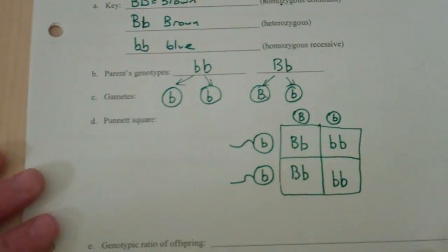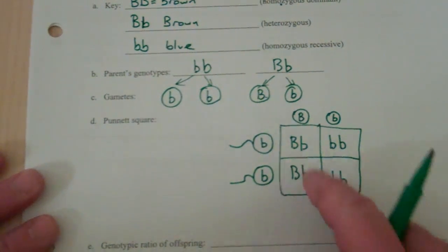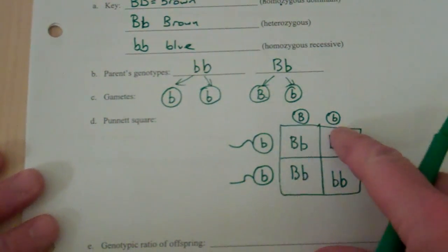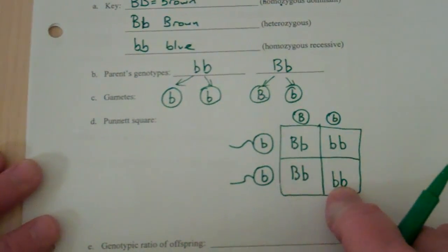So now look at what you've got. You've got a Punnett square that predicts that your offspring are going to be, half of them are going to look like this, half of them are going to look like this. Well, what does that really mean? These are genotypes.